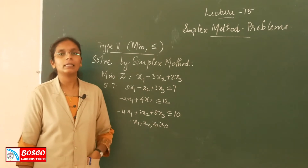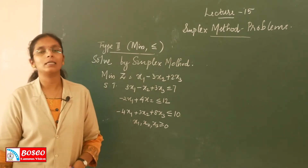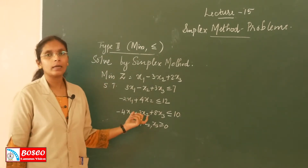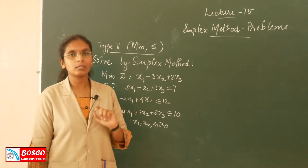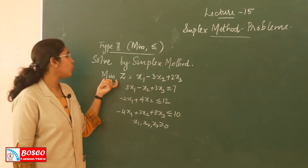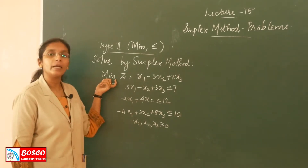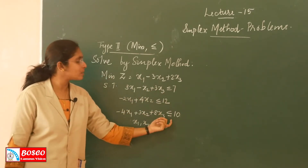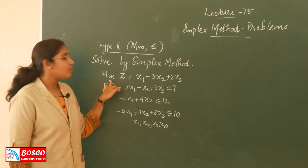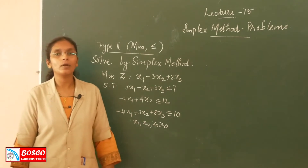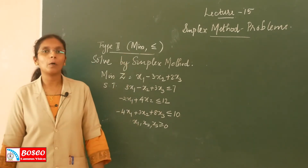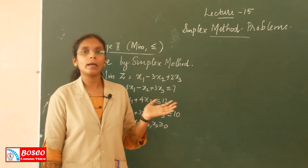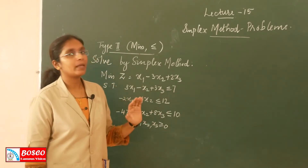This problem has 3 decision variables: X1, X2 and X3. The optimality condition here is a minimizing condition, and all the constraints are of the form less than or equal to. Therefore, this problem is a Type 2 problem.